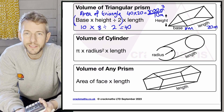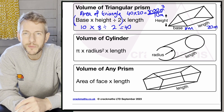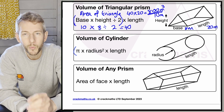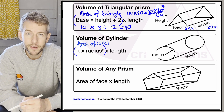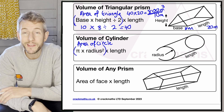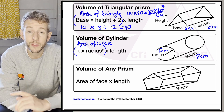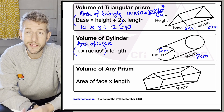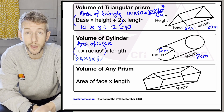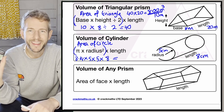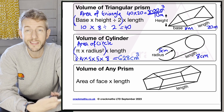The volume of a cylinder is very similar to the triangular prism. The formula is pi r squared times length, where pi r squared gives the area of the circle, and we multiply by the length to get the third dimension. With a radius of 5 centimetres and a length of 8 centimetres, that's pi times 5 times 5 times 8, which gives us 628 centimetres cubed.